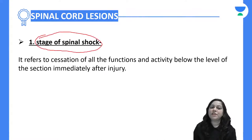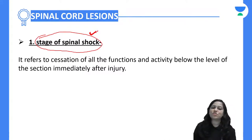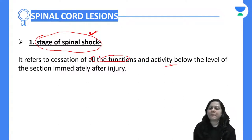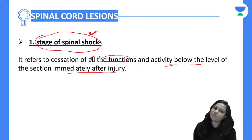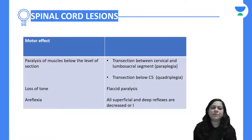Understand the word carefully — in physiology, understanding the word will give you half the knowledge. Spinal shock means complete cessation of all functions and activity below the level of the transaction immediately after the injury. All functions will be lost. A motor effect is paralysis of the muscles below the level of injury.